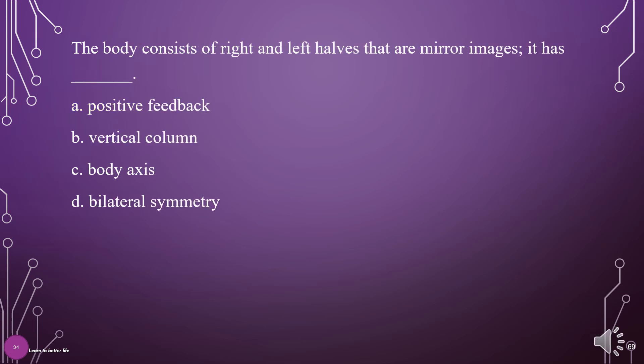The body consists of right and left halves that are mirror images. It has what? A. Positive feedback, B. Vertical column, C. Body axis, D. Bilateral symmetry. The answer is D: Bilateral symmetry.